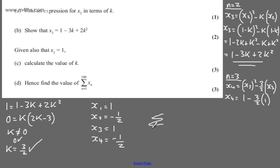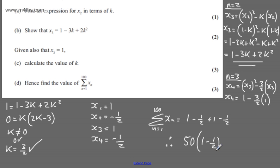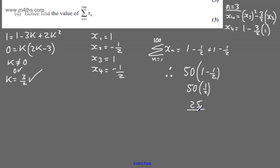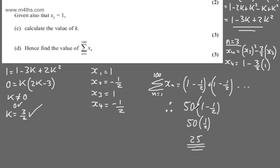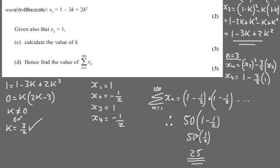The sum from n = 1 to 100 of x_n: the terms are 1, -1/2, 1, -1/2, ... repeating. We have 50 pairs of (1 + (-1/2)). So the sum = 50 × (1 - 1/2) = 50 × 1/2 = 25. There's going to be flexibility in terms of the free marks on offer.